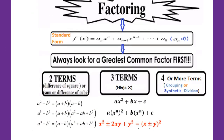Today's lesson is about factoring polynomials with two terms. First of all, you have to find the GCF and then check. If there are two terms in the polynomial, you will check these three forms. Only these three forms allow you to do the factoring. Otherwise, just leave it as it is — you cannot factor anymore.